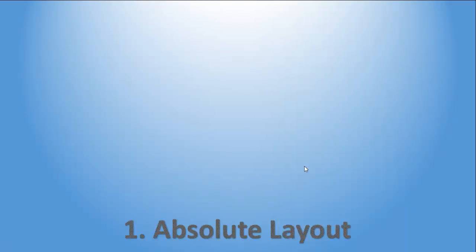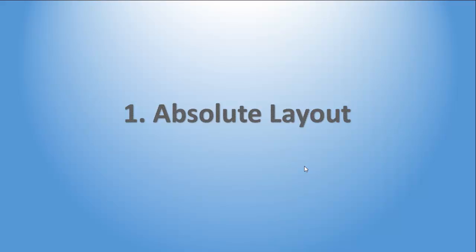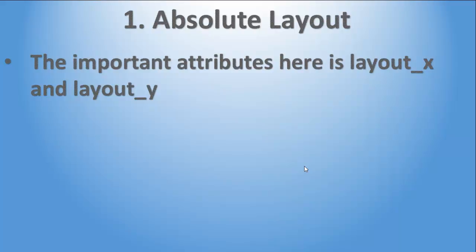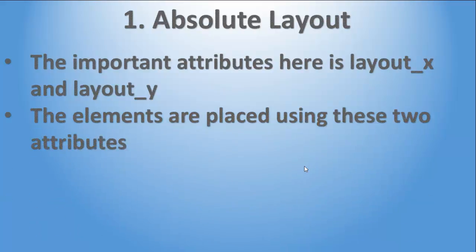The first layout we are going to check out is absolute layout. What are the important attributes in absolute layout? Whenever you place any control in the layout — a button, text view, or whatever it may be — two important attributes are captured for each control: layout_x and layout_y.